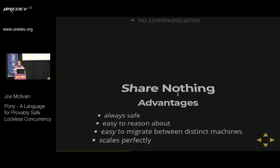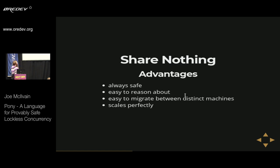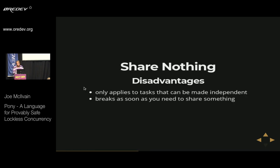So share nothing is always safe, easy to reason about, easy to migrate between distinct machines, and scales perfectly. But it only applies to tasks that can be made independent, and it breaks as soon as you need to share something.